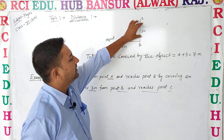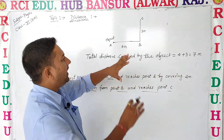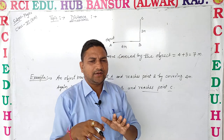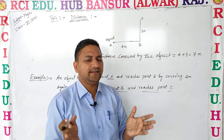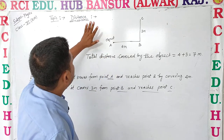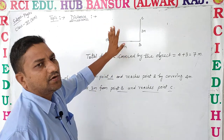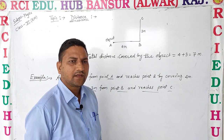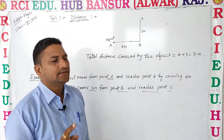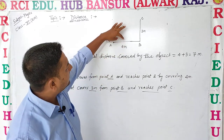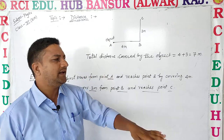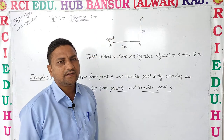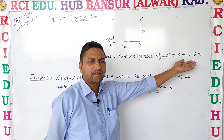So 4 plus 3 is 7 meters. The actual path length travelled by the object — the distance covered — is 7 meters in total.